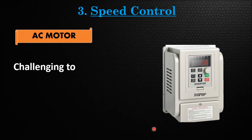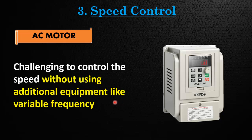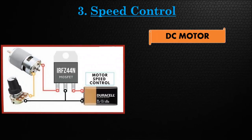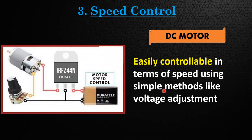AC motors are generally more challenging to control in terms of speed without using additional equipment like variable frequency drives, VFDs, which is an expensive solution. DC motors, on the other hand, are easily controllable in terms of speed using simple methods like voltage control or the addition of resistance in series with the armature.